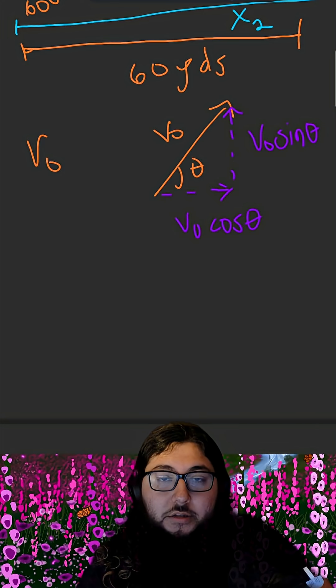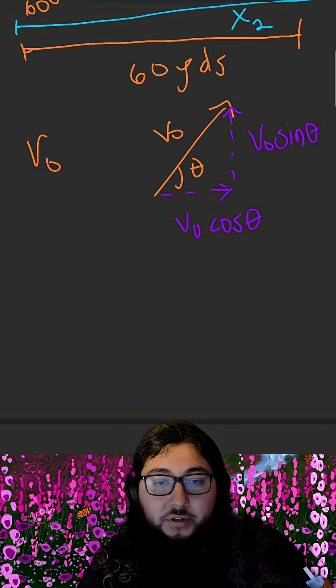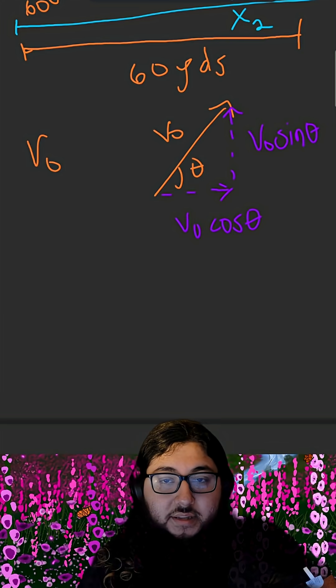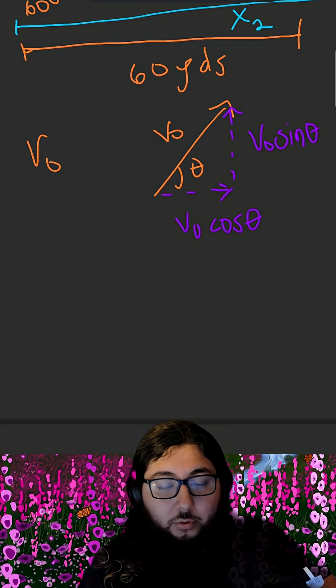Our approach for this problem is going to be to use the kinematic equations to solve for time in terms of variables that we do know, and then solve for the distance that the ball travels when we throw it at a 45 degree angle.